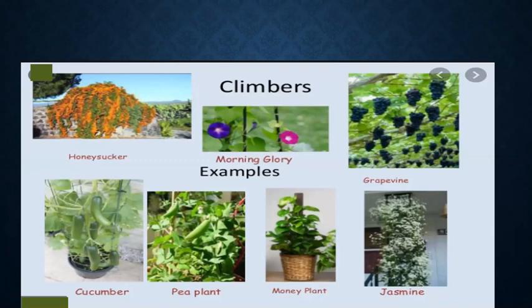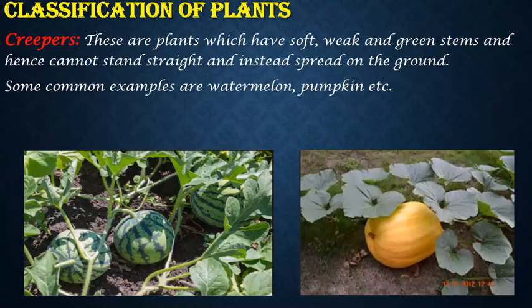Let's talk about creepers. These are plants which have soft, weak and green stems and hence cannot stand straight and instead spread on the ground. Very common examples of creepers are watermelon and pumpkin.